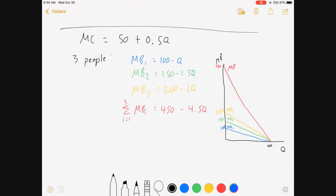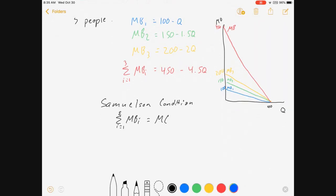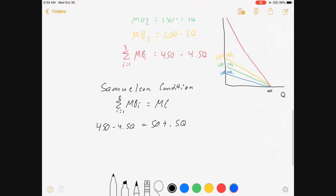what's our Samuelson rule? Don't forget, the Samuelson condition is equating marginal benefits with marginal costs. And in this situation, that's 450 minus 4.5 Q equals 50 plus 0.5 Q, which comes out to be 400 equals 5 Q. Q equals 80.